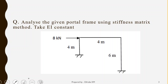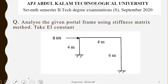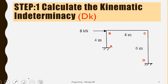So let us see the question. The question is: analyze a given portal frame by using stiffness method, take EI constant. This question was from a Beta supplementary examination conducted in September 2020 by APJ Abdul Kalam Technological University. In order to analyze this frame, the first step is to calculate kinematic indeterminacy.